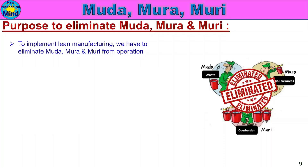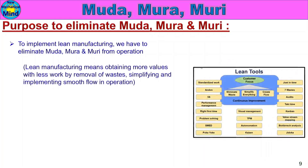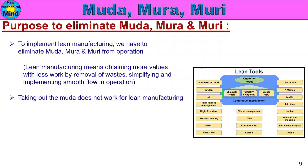When a company implements lean operations, it needs to eliminate operations and remove waste. Lean manufacturing means obtaining more with less work by removing waste and implementing smooth flow in operations. Lean manufacturing is about smooth, continuous production flow — this is lean manufacturing. Simply taking out Muda alone does not fully work for lean manufacturing.